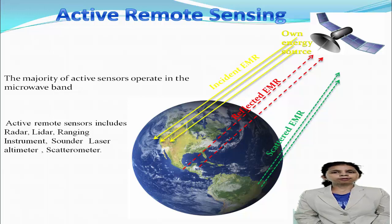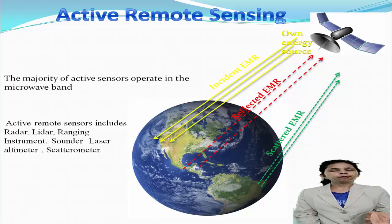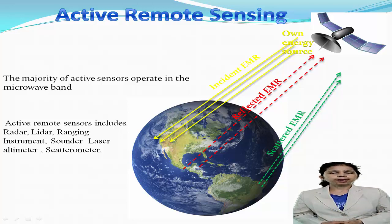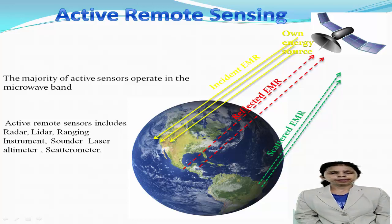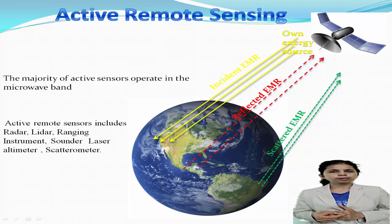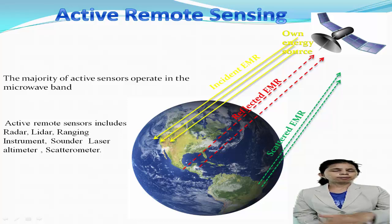Active remote sensors include LIDAR, laser altimeter, SCATROMETER, and SOUNDER. For example, SCATROMETER is an active remote sensor used to derive maps of wind speed and direction over an ocean surface. Using this information, the amount of rainfall and in which area rainfall will occur can be predicted. SCATROMETER has a microwave radar which sends signals to the ocean surface. These microwave radiations are reflected or scattered from the ocean surface and detected and measured by the SCATROMETER, providing information about rainfall amount and rainfall prediction.